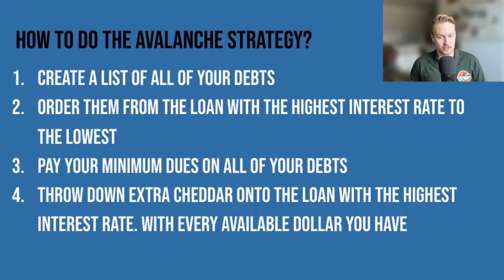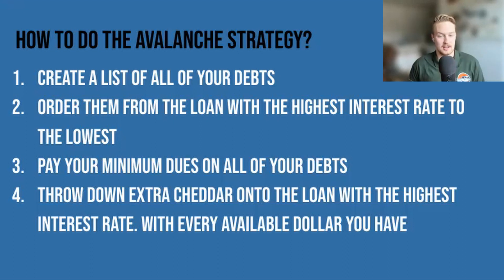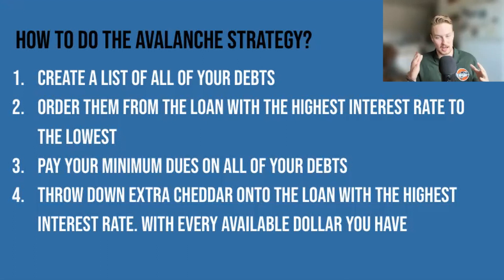After that, within that list, you're going to order the loans or debts from the highest interest rate to the lowest — highest to lowest. Then thirdly, you're going to pay your minimum dues on all of your other debts so you don't get in trouble. Just pay the minimum on all the debts you have.